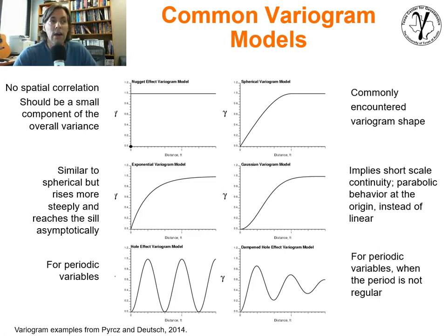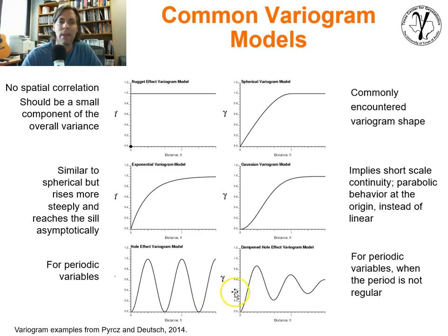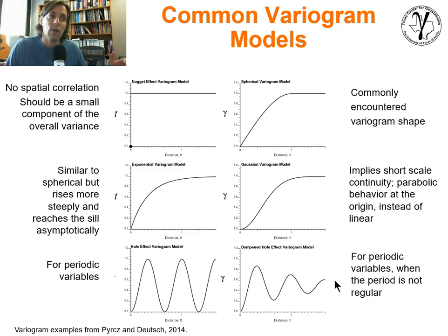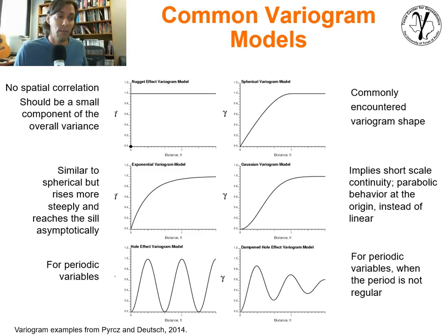Common models we can work with: the nugget effect, the spherical, the exponential, the Gaussian. There is also the hole effect model — a periodicity model. Not practically used much in simulation or estimation; usually we'll model the trend of the cycle and remove it. The dampened hole effect is very interesting — if you take the product of multiple positive definite models, that product is also positive definite. If you multiply an exponential by a hole effect, you get the dampened hole effect. But we will focus on these four structures — nugget, spherical, exponential, Gaussian — for all of our modeling.